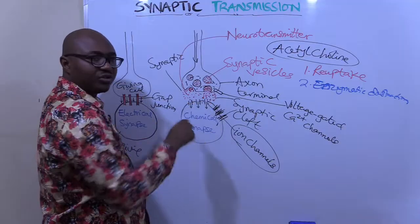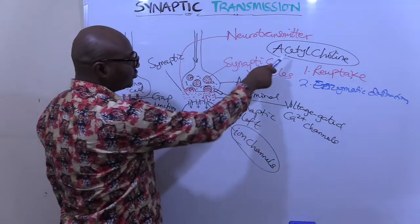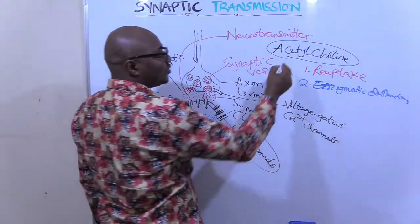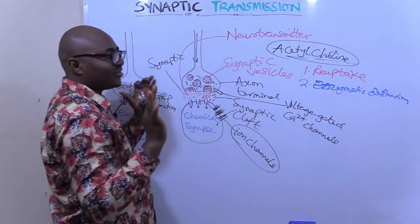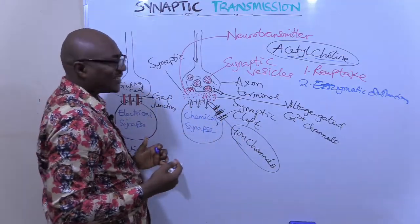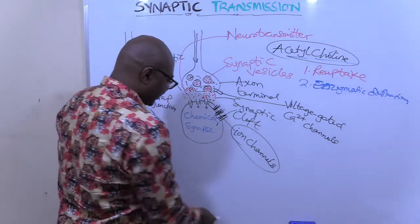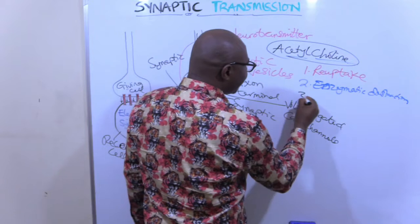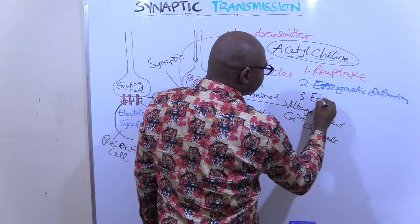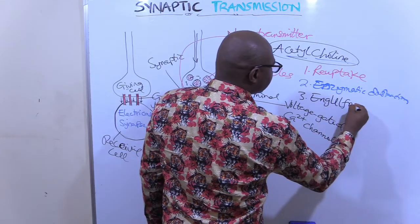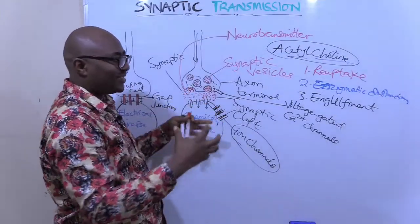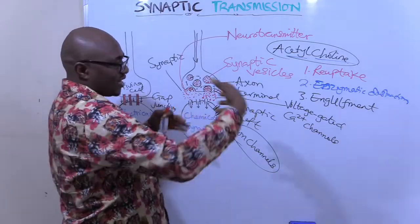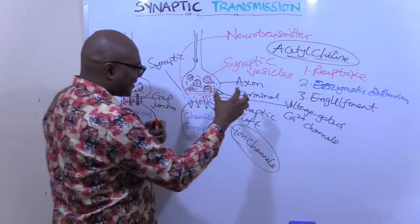For example, in the case of acetylcholine, there is what is called cholinesterase — an enzyme that breaks down acetylcholine into acetate and choline, to destroy it so it doesn't remain there and continue to activate. The third method is called engulfment: macrophages come and engulf through pinocytosis, and eat up the neurotransmitters, clearing them away from that place.